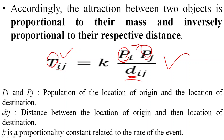More distance means less tourist flow; more population means more tourist flow. K is the proportionality constant, which we always include in such mathematical expressions. The result of the formula represents the number of tourism activities, tourist flow, or tourism interactions between two places. Essentially, the gravity model expresses spatial interaction between two places in the form of a mathematical expression.